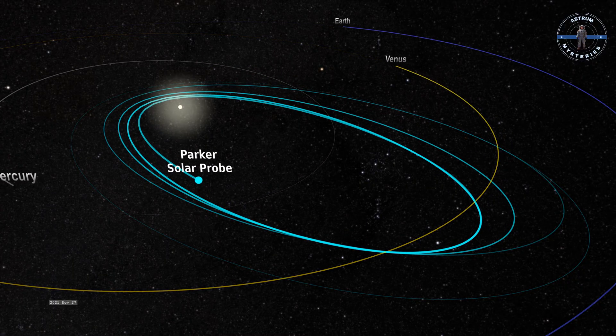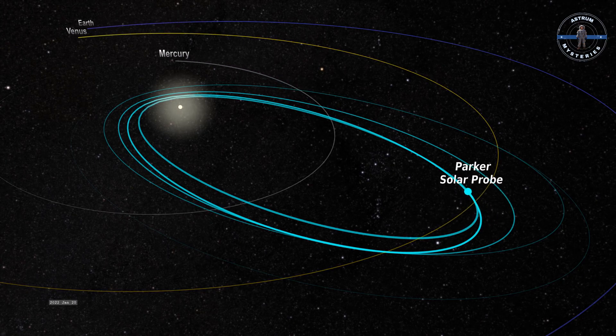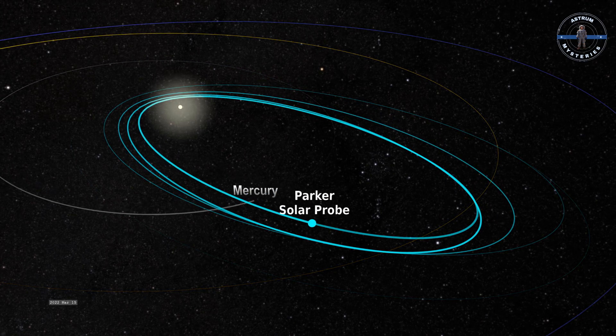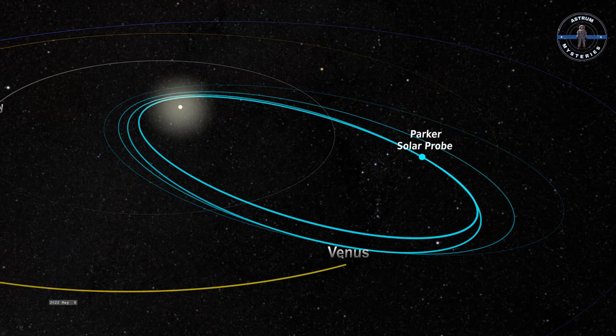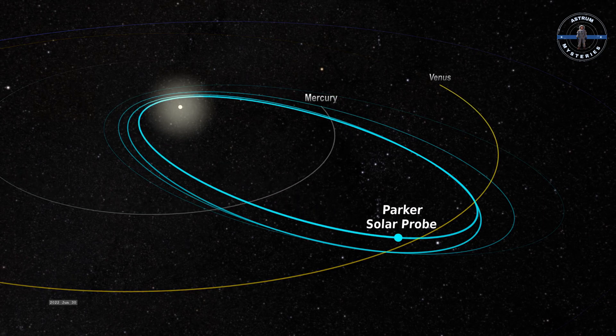By the end of its mission, it will come within four million miles of the sun's surface, closer than Mercury.